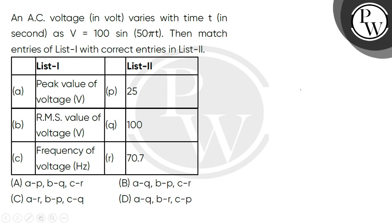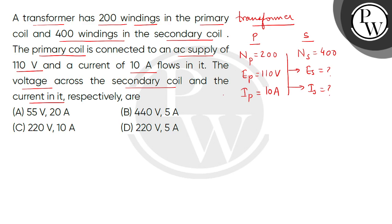तो Bacchum, जब हम transformer का basic formula consider करते हैं which is ES divided by EP is equal to NS divided by NP. तो यहां values put कर देंगे, ES is equal to 110 multiplied by 400 divided by 200. तो यह answer आ जाएगा 220 volts.